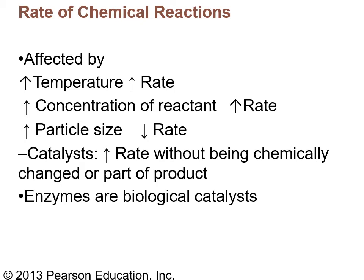Several factors affect how chemical reactions occur. Increasing the temperature increases the rate of the reaction. Increasing the concentration of the reactants increases the rate. Bigger particle size requires more energy, slowing it down. A catalyst — and an enzyme is the same thing — increases the rate without being chemically changed or consumed. You have millions of enzymes in the body that are biological catalysts, speeding up reactions without being consumed.